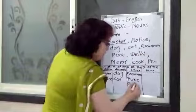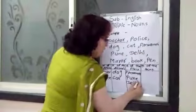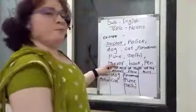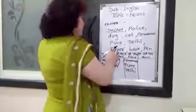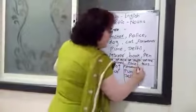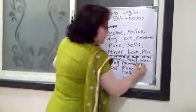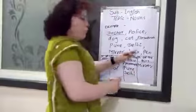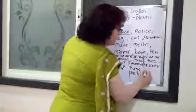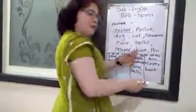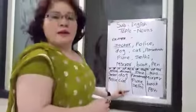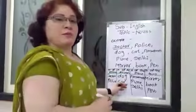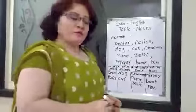We can write Delhi under places. Now, name of the thing — mirror is not an animal, not a person, not a place. Mirror is a thing. Book is also a thing. And pen is also a thing. This is all about the noun — this is the primary information about nouns. Thank you.